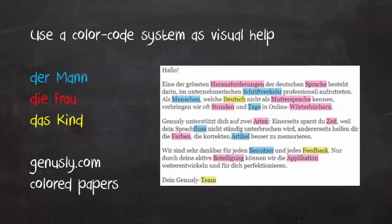By the way, an interesting variation of this technique is having colored sheets of paper, where each color stands for a particular gender. You could have blue paper and when you learn a new masculine noun, you write it there. Red paper for feminine and yellow for neuter nouns. This has been part one of the lesson on how to learn German noun gender. I'll see you again in part two.